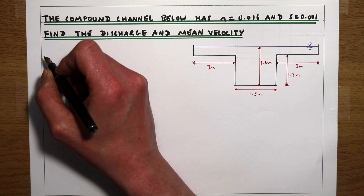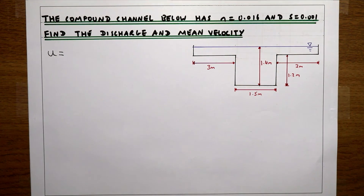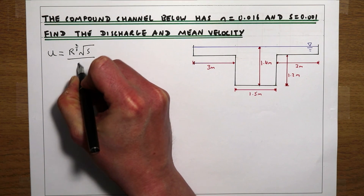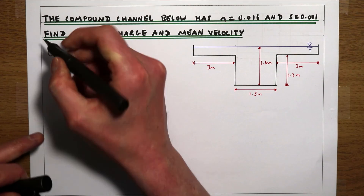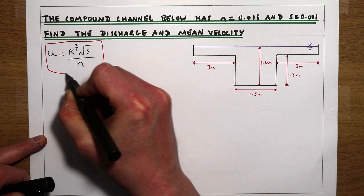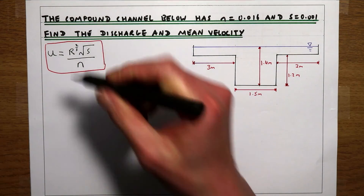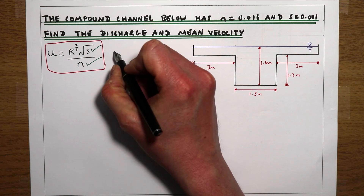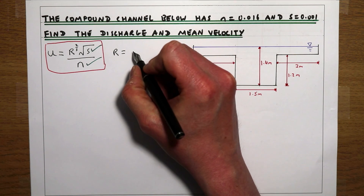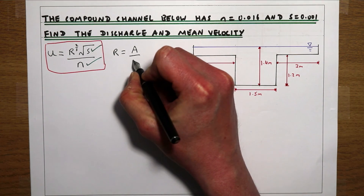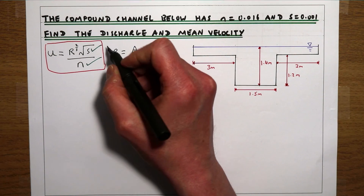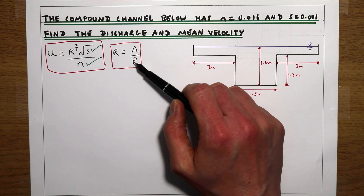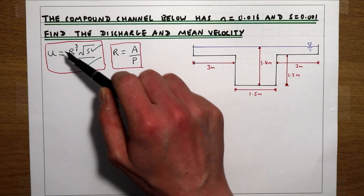Our starting point is Manning's equation. The velocity of fluid in a channel is the hydraulic radius to the power of 2/3 times the square root of the longitudinal slope divided by the roughness. In the question we're given the longitudinal slope and the roughness value. To work out the velocity, all we need to do is work out the hydraulic radius and plug that into Manning's equation. The hydraulic radius is the area of the channel divided by the wetted perimeter.